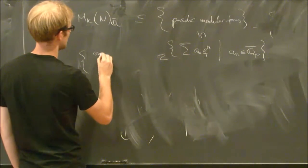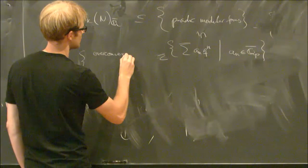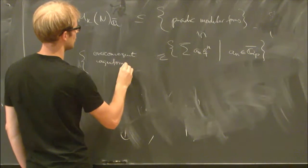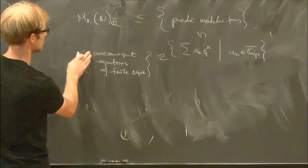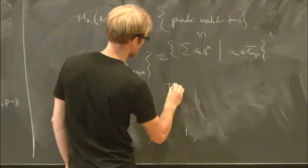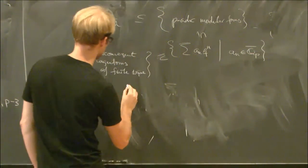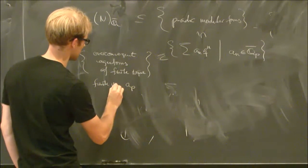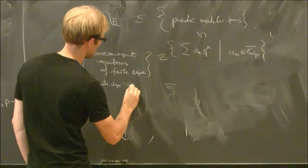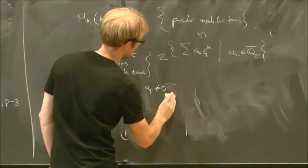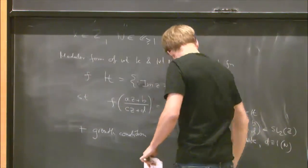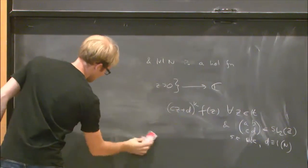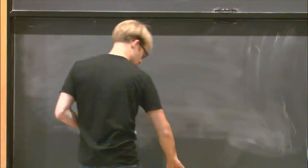So, inside these, there is something called overconvergent eigenforms of finite slope. So I'm afraid I'm not going to say anything about this. Finite slope simply means that the a_p is non-zero.